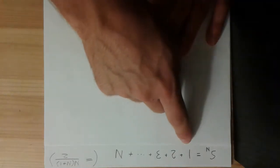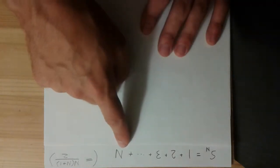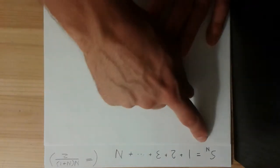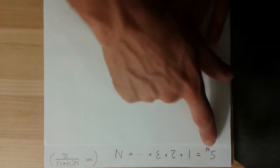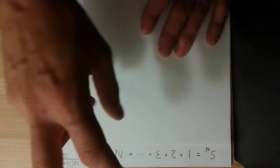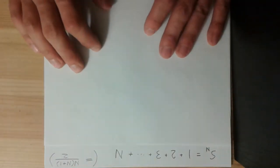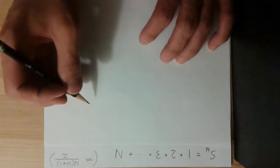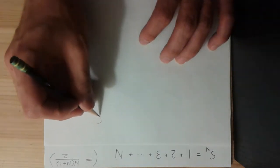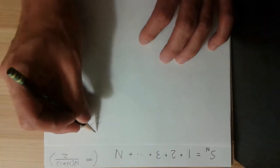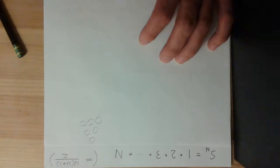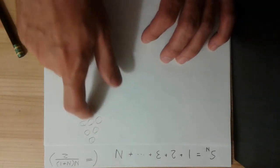So, if you take all of the integers up to a certain point n, and you add them together, this is called the nth triangular number, so Sn, those are triangular numbers. The name comes from, you can draw a diagram like S3 would be 3 plus 2 plus 1. So, this is a triangle obviously.